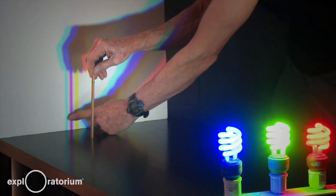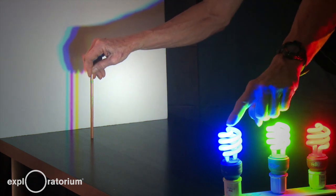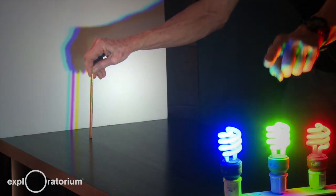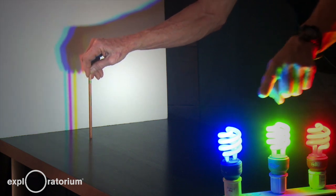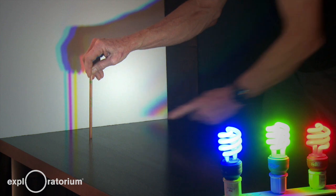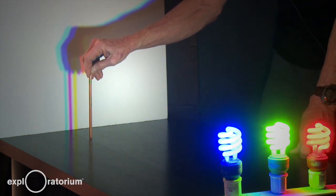In that shadow, light from the blue bulb can hit because the blue bulb is in a different position from the red bulb. And the same with the green. So in that shadow, we have blue and green light added together to make cyan.